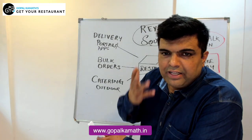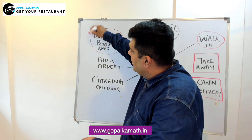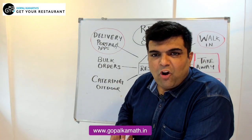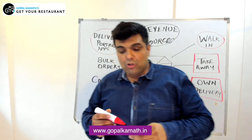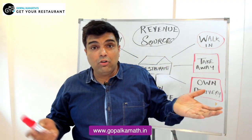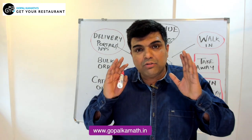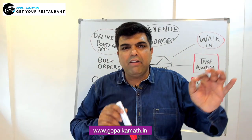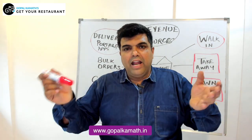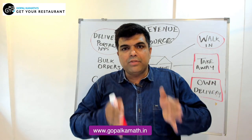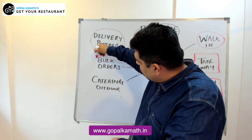The fourth source is delivery partners. Delivery partners like Zomato, Swiggy, Magic Pin, and others are the latest and hottest topic in delivery. A lot of restaurant owners are not even registered on these portals, and that is one of the biggest mistakes. You have to be present everywhere so that wherever a customer wants to find you they can, and that way your minimum sales and minimum profit are guaranteed.